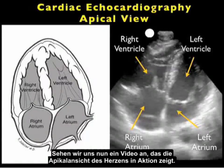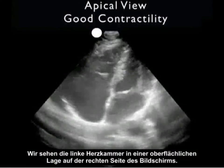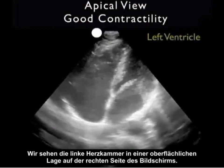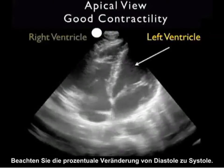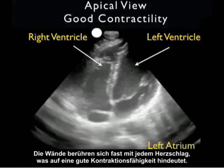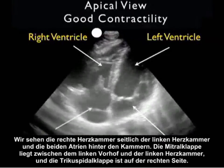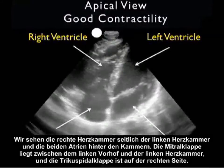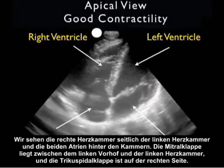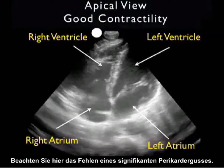Now let's take a look at a video clip showing the apical view of the heart in action. This is taken from a medical student triathlete. We see the left ventricle in its more superficial location to the right of the screen. Notice the percentage change from diastole to systole — the walls almost touch with each heartbeat, indicating good contractility. We see the right ventricle adjacent to the left ventricle and the two atria posterior. Notice the mitral valve between the left atrium and left ventricle and the tricuspid valve to the right side, and the absence of any significant pericardial effusion.